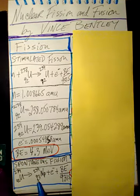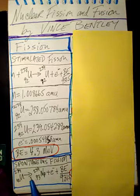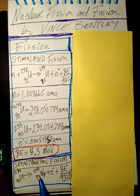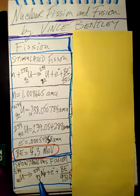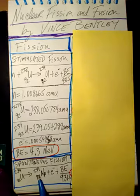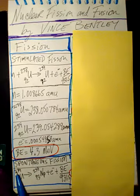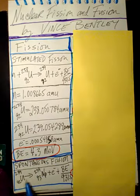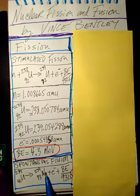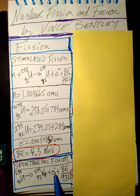Notice that neptunium has 93 protons. So the proton number inside the nucleus has gained one, and yet the mass has stayed the same for both of these. The uranium will break up into neptunium and an electron.